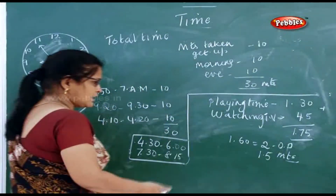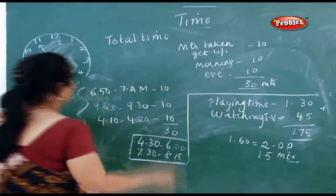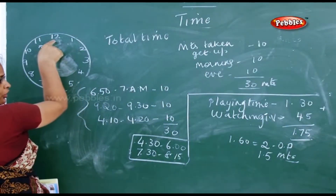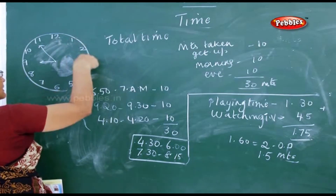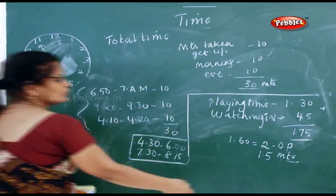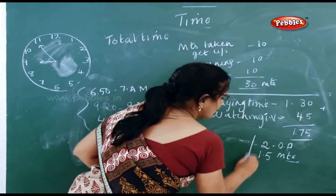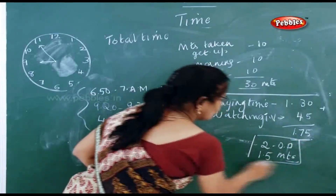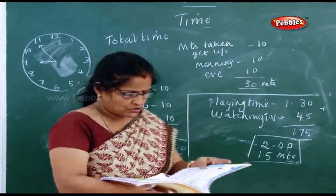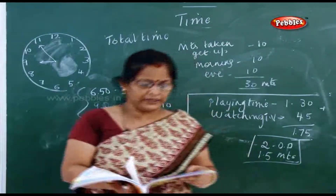So 1 hour 75 minutes equals 2 hours 15 minutes — because 1 hour 60 minutes becomes 2 o'clock, and then the remaining 15 minutes gives 2:15. So 2 hours and 15 minutes is the time taken to play and watch TV. This is how you have to do your activity.